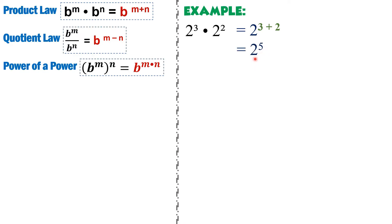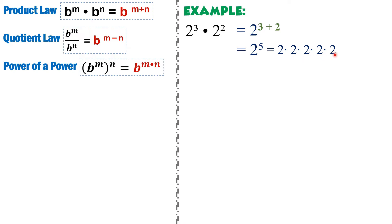And 2 raised to 5 is the same as multiplying 2 by itself 5 times: 2 times 2 times 2 times 2 times 2, which gives us 32. So the answer is 32.